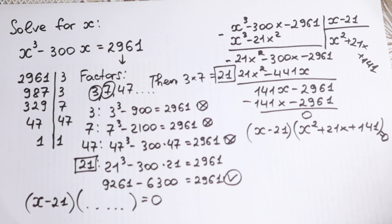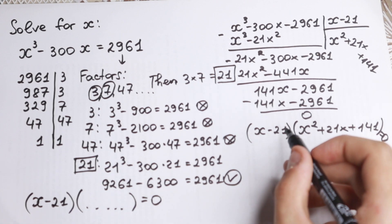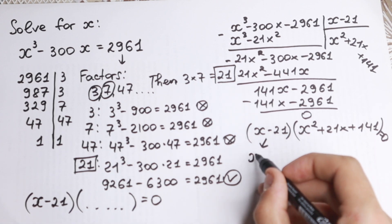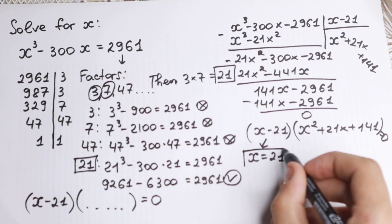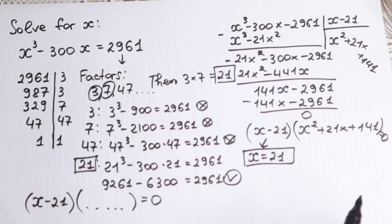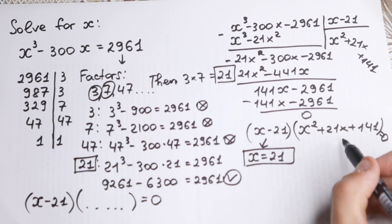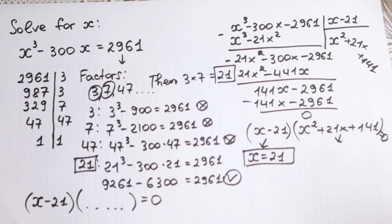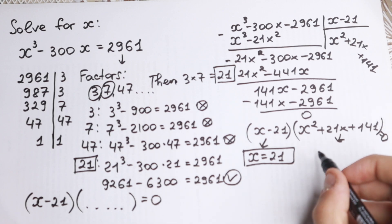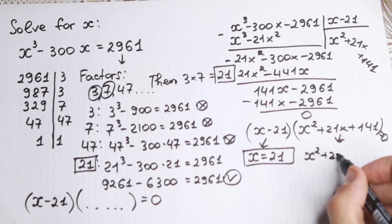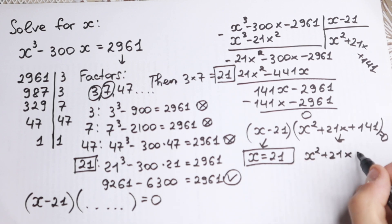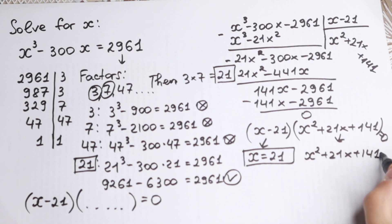So we have factored our equation as (x minus 21)(x squared plus 21x plus 141) = 0. From the first factor, x equals 21 is our first real root. Now we need to solve x squared plus 21x plus 141 = 0 to find the second and third roots.